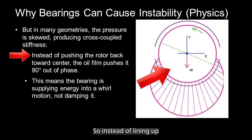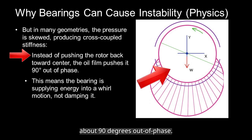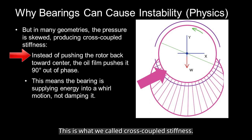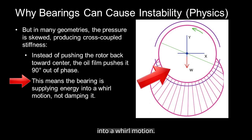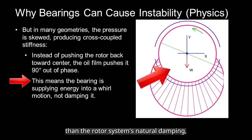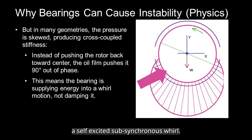Instead of lining up with the displacement, the reaction force from the bearing can be shifted about 90 degrees out of phase. This is what we call cross-coupled stiffness. Rather than damping vibration, the bearing is actually feeding energy into a whirl motion. And here is the danger: if those cross-coupled forces are stronger than the rotor system's natural damping, the machine develops a self-excited whirl — in other words, instability.